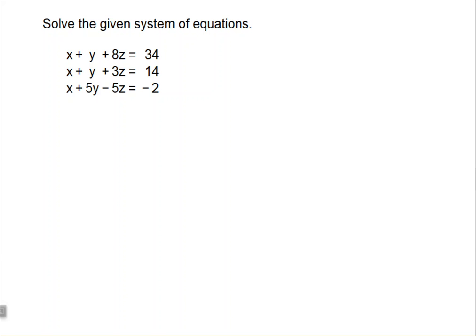So on this first example, we are given these three equations. We have x plus y plus 8z equals 34 as equation one. Equation two: x plus y plus 3z equals 14. And equation three: x plus 5y minus 5z equals negative 2.